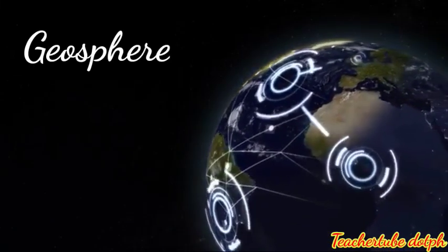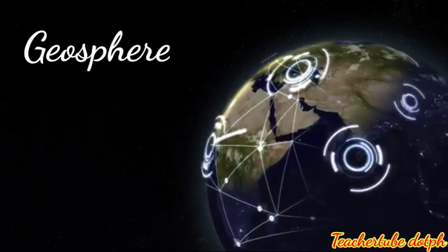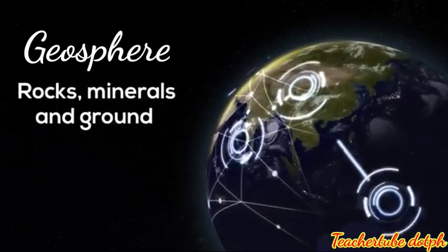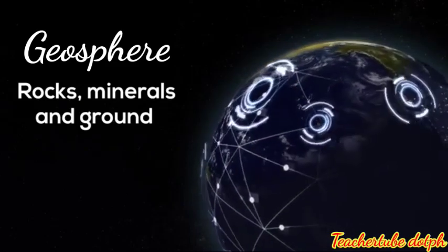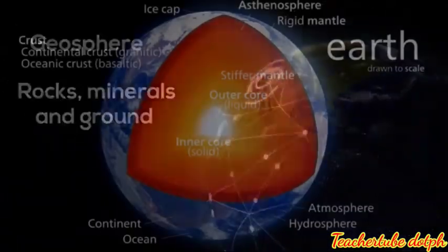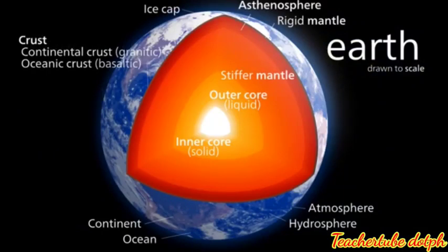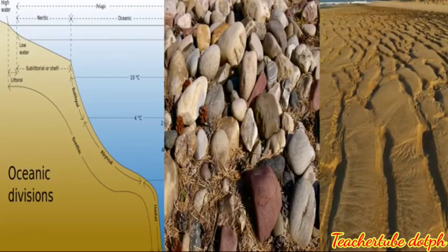The geosphere describes all the rocks, minerals, and other parts of the ground found on and inside the Earth. The geosphere includes the inner core, outer core, crust, and mantle. It also includes the ocean floor, all the rocks on the surface, the sand in the desert, and the interior of the Earth.